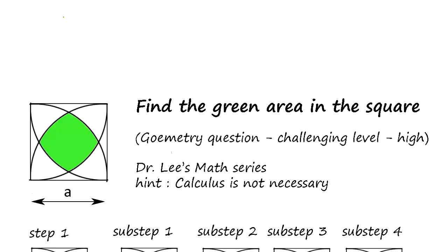You draw the quarter circle from each corner and intersecting point, we need to find this area. That's the objective here.